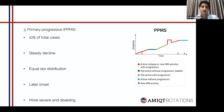Regarding the primary progressive variant, around 10% of total cases come under this variant. The decline is very steady and the sex distribution is equal — 1 to 1 — unlike the other two. The features are usually seen after the third decade of life, later in onset but more severe and debilitating. As seen by the graph, there is no relapsing period and the active phase directly starts with the red line, followed by a stable phase indicated by the blue line, an inactive phase with progression by the green line, and a subsequent active phase with progression by the red line again.